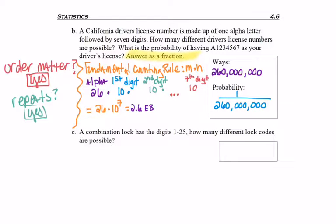I asked you to write this one as a fraction, because if you enter 1 divided by 260 million in your calculator, go ahead and try it, I got 3.84, et cetera, and then E to the negative 9. So I would need to move that decimal 9 places to the left and have .000000003846, et cetera. So very rare chance of having that as your driver's license number.